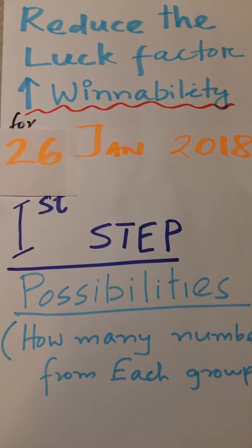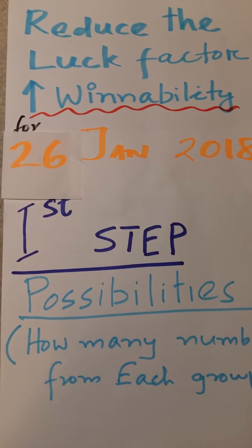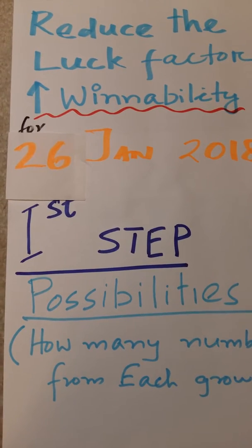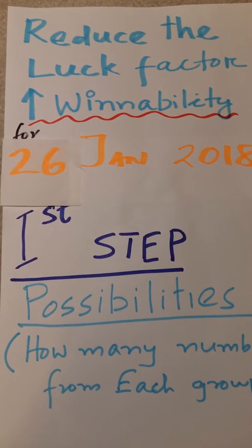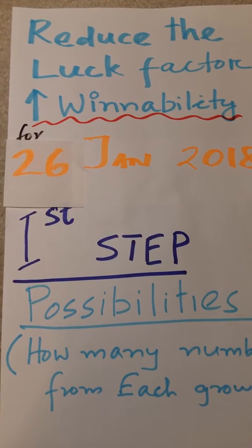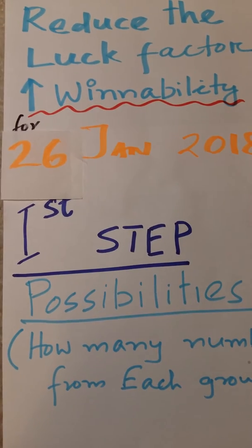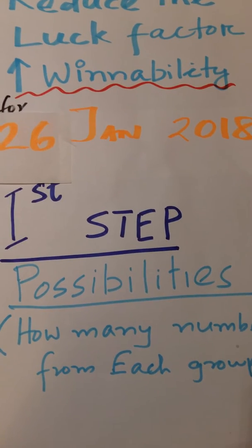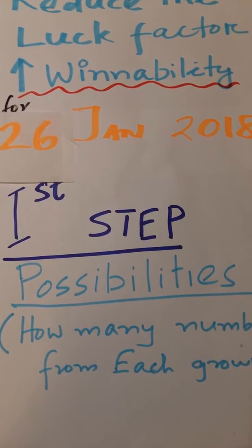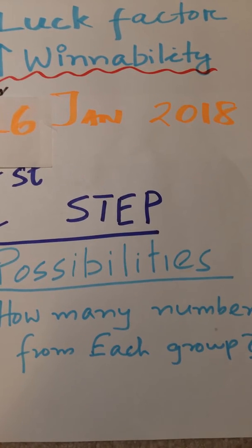Hi friends, this is another video of the series Reduce the Luck Factor from Lotto Max. Our strategy is increase winability by reducing the loss ability. Prediction for January 26, 2018. First step: possibilities - how many numbers can appear from each group?